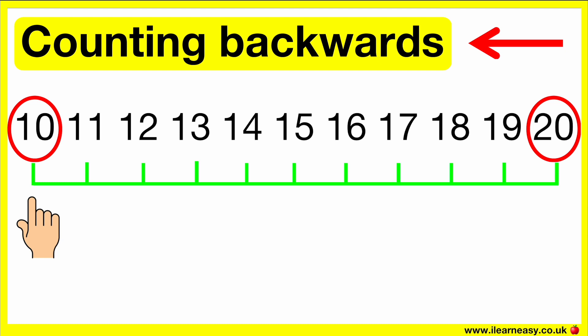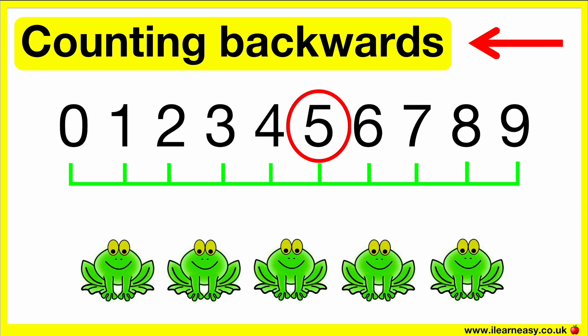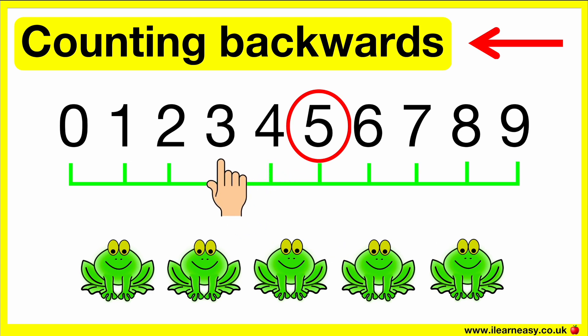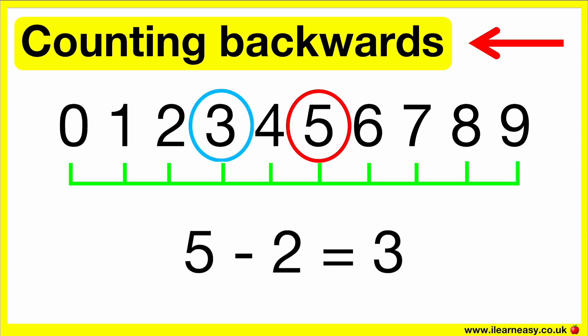Now, let's work through some examples. Here are five frogs. If two frogs jump away, then how many frogs are left? Start at five because there are five frogs. Then, count back two. Four, three. So, there are three frogs left. Five minus two equals three.